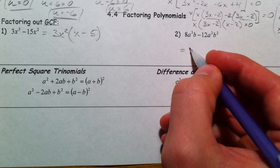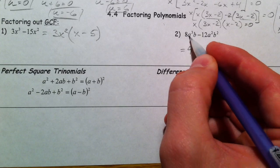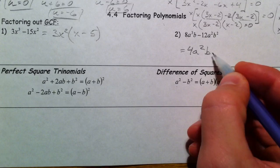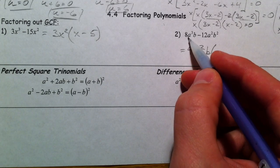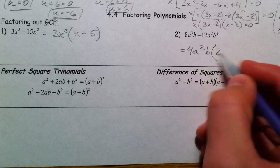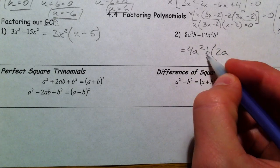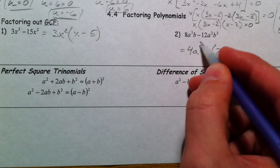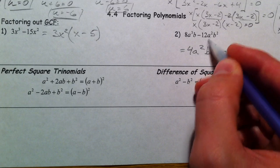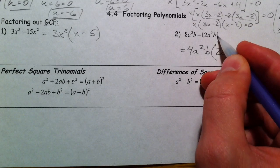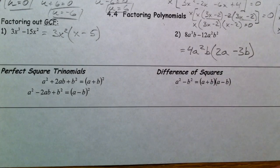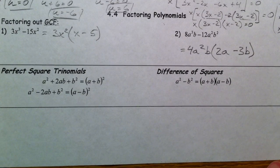This one — 8 and 12 both have a 4. The a's: there are 2 a's, and there is 1 b. When you take out the 4, you get a 2 left — 8 divided by 4 is 2. a³ divided by a² leaves a; b divided by b leaves nothing, just 1. Then 12 divided by 4 is 3; a² divided by a² is 1; b² divided by b is b. And there you have it — the very first kind of factoring you ever did.